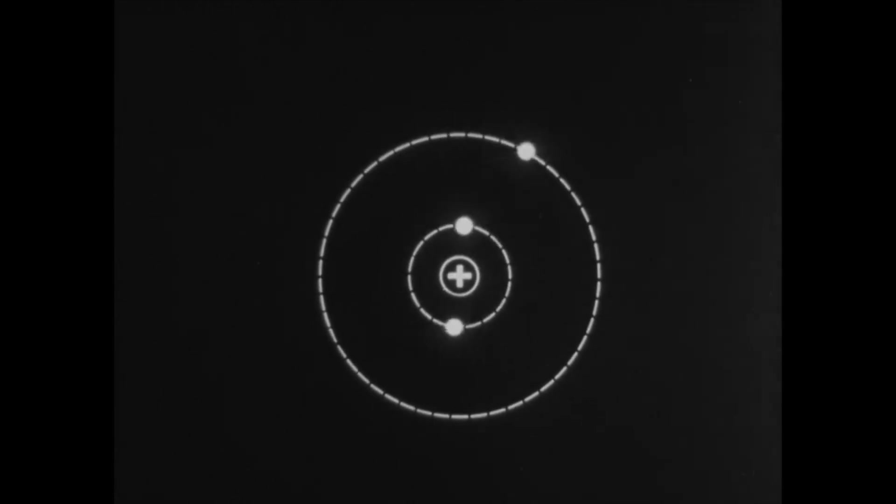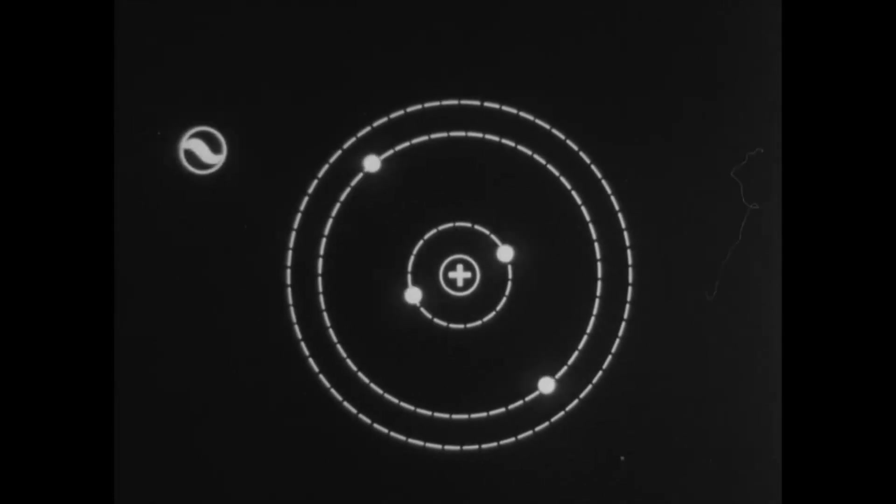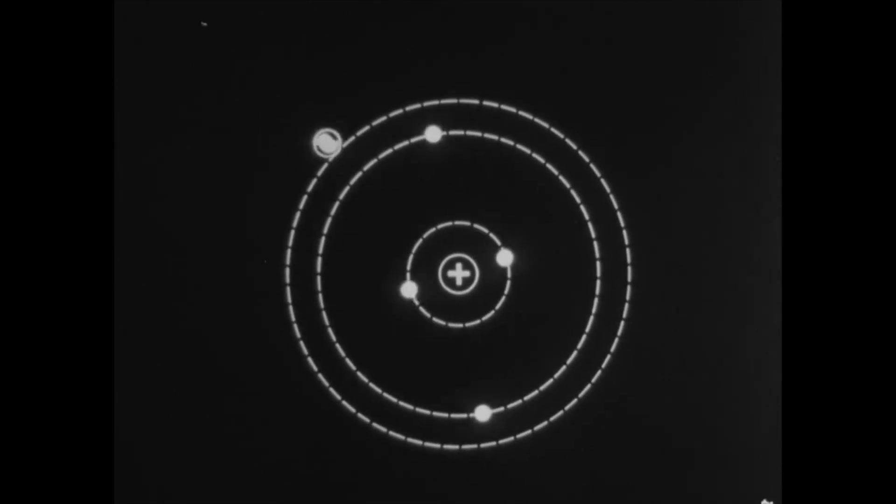The next electron layer, the L layer, can contain up to eight electrons. And its filling begins with the element lithium and ends with neon.